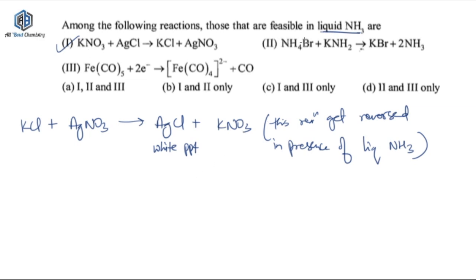For the second reaction: NH4Br reacting with KNH2 gives KBr plus NH3. This is a neutralization reaction and ammonia is being formed, so this reaction is obviously feasible in liquid ammonia.